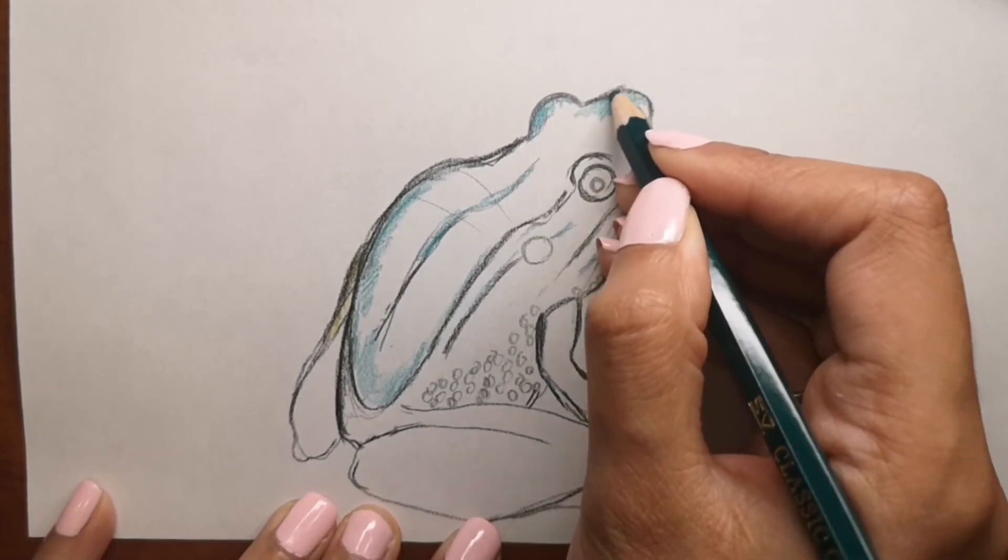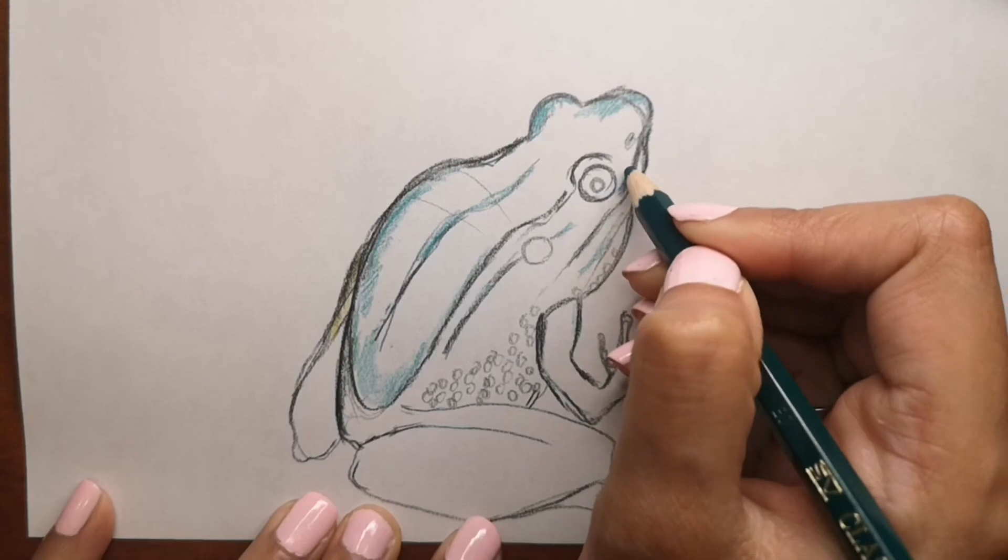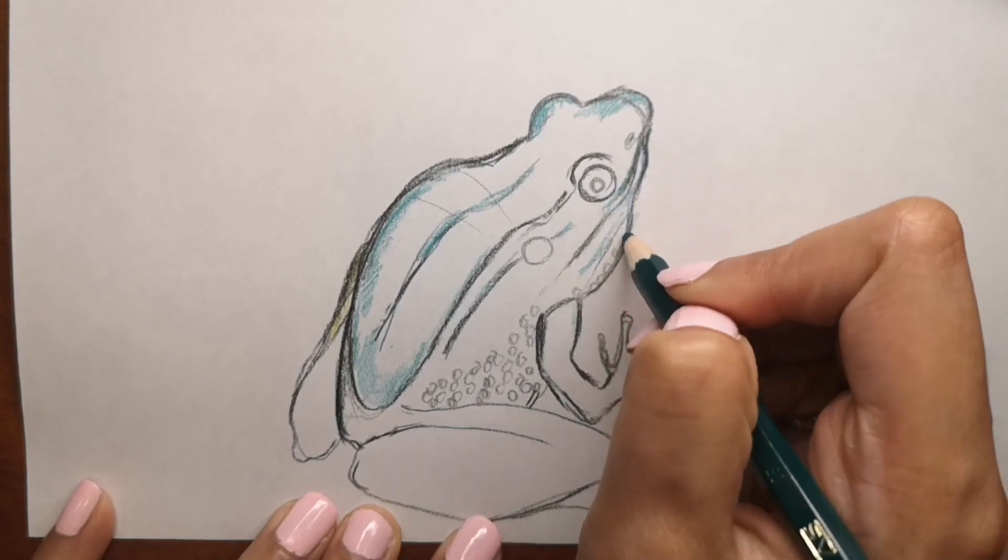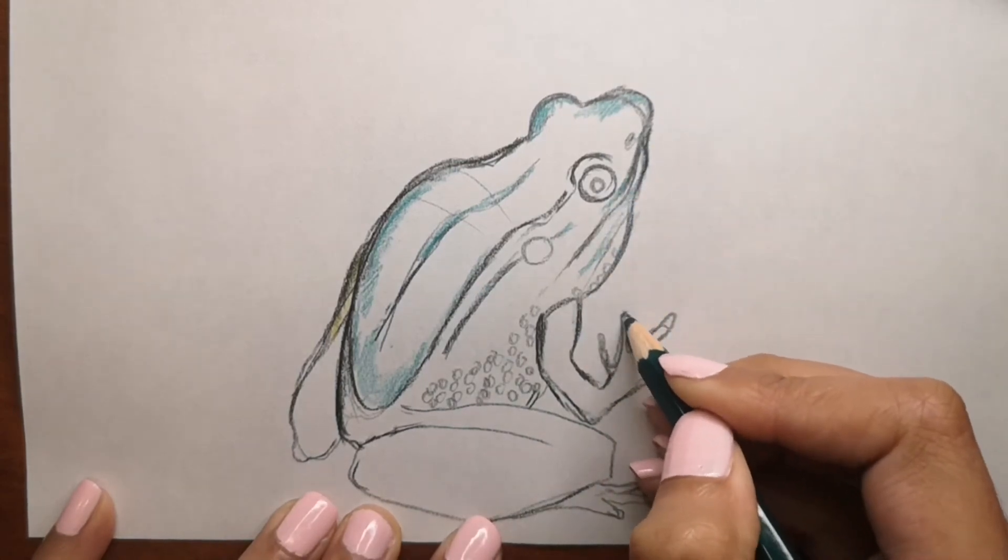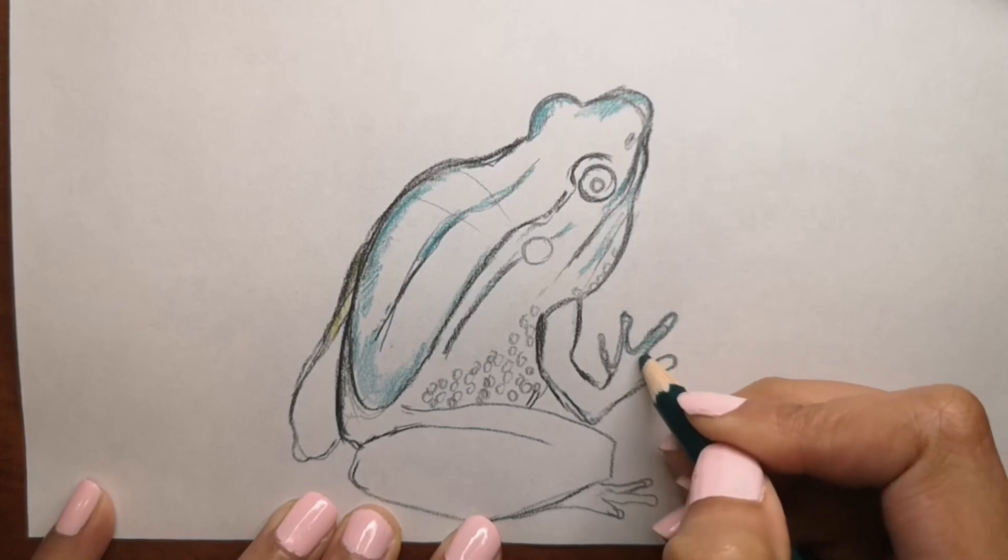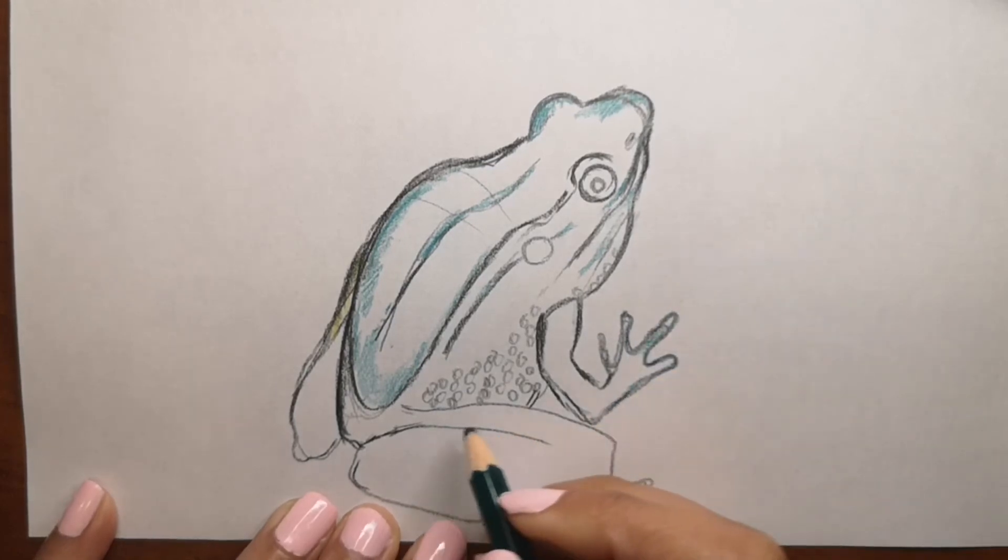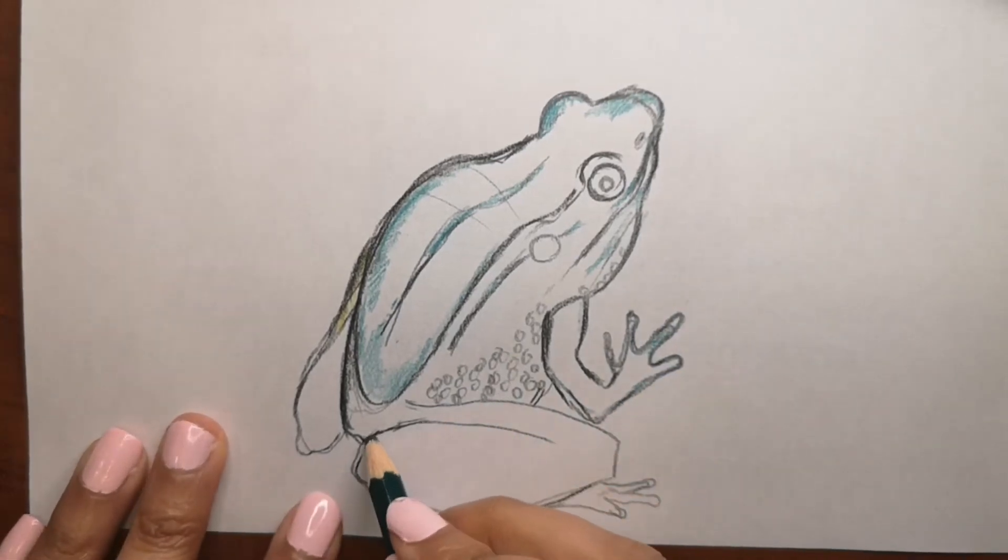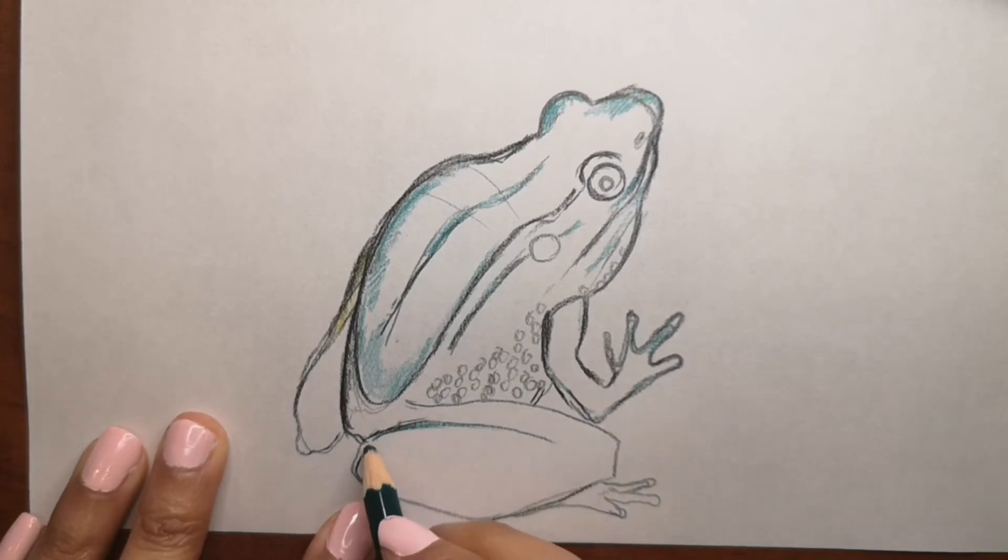If you didn't know—I didn't know this before—frogs do have teeth in the upper jaw, which they use to keep their prey in one place until they can swallow it. It's like to hang the prey in there, kind of like a barrier.